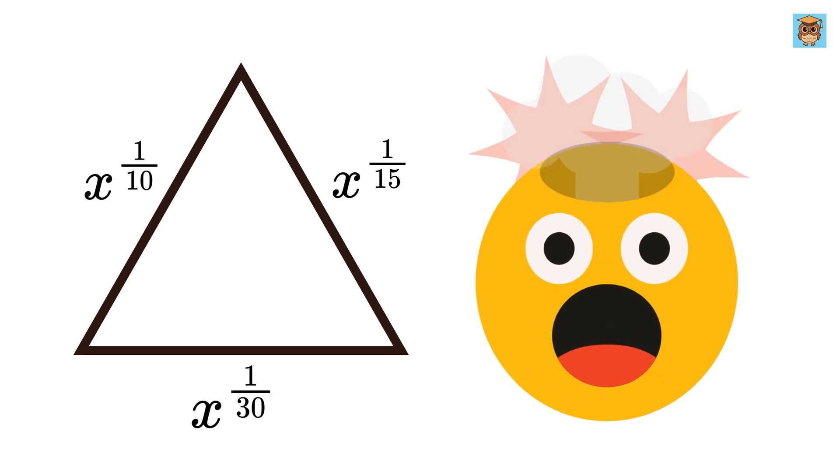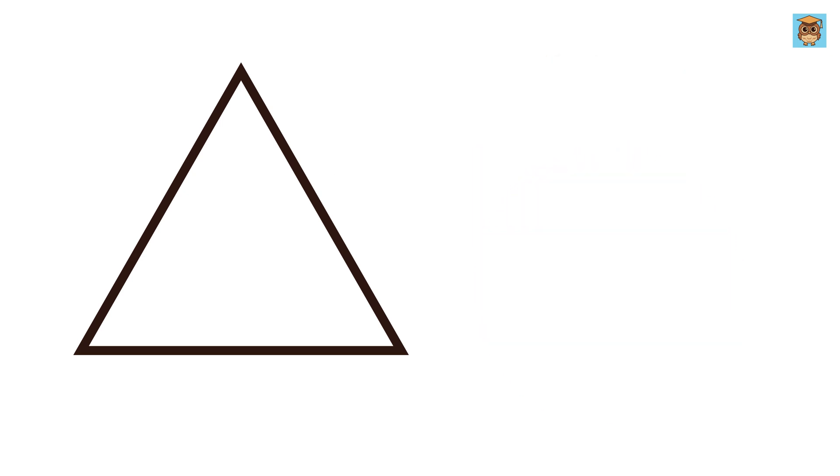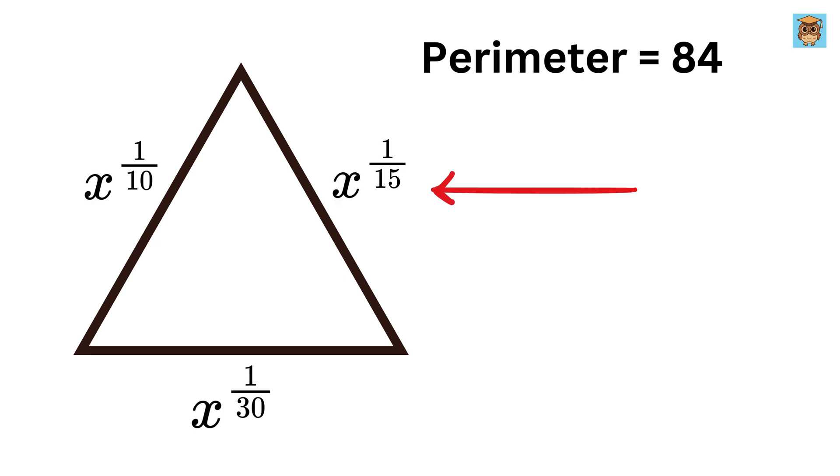This question is going to blow your mind. We have a triangle whose perimeter is given to us, which is 84 units, and the sides of this triangle are x raised to 1 over 10, x raised to 1 over 15, and x raised to 1 over 30.